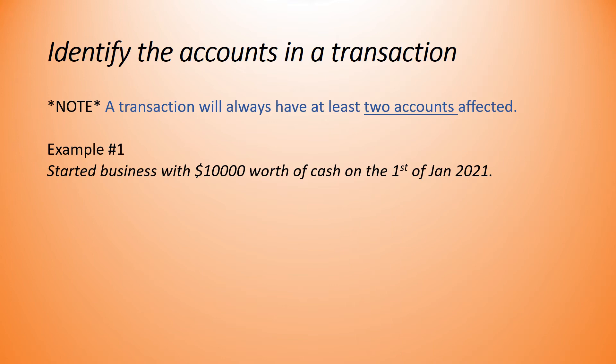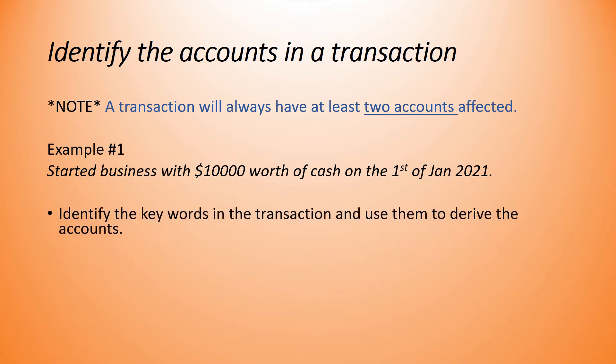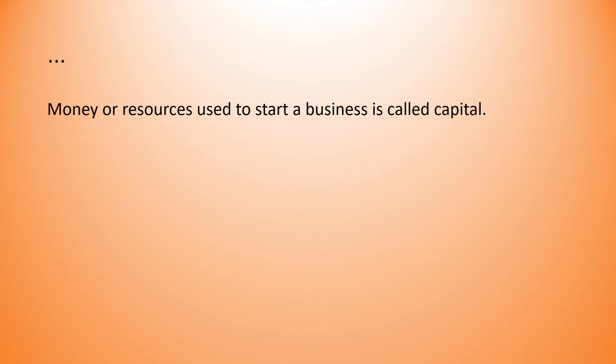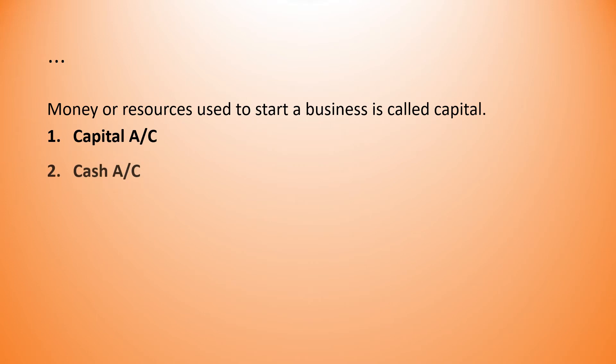You need to identify the keywords in the transaction and use them to derive the names of the accounts affected. The keywords in this case are 'started business with cash.' Money or resources used to start a business are called capital, so the first account becomes the capital account. There has to be at least one other account, hence the cash account becomes the second one.